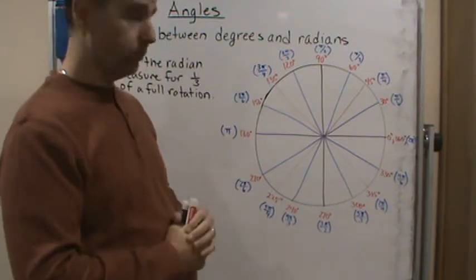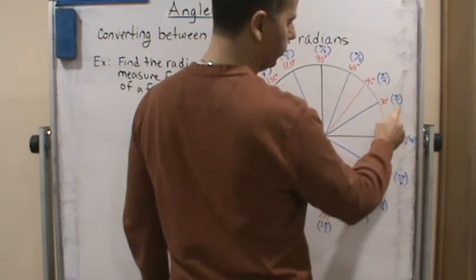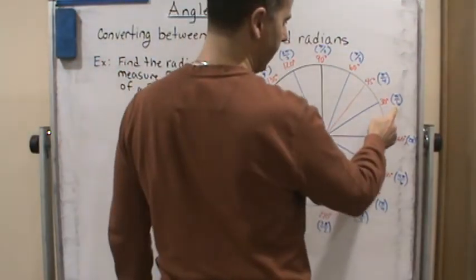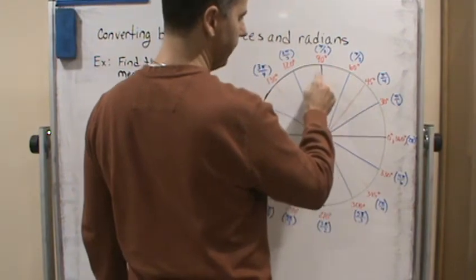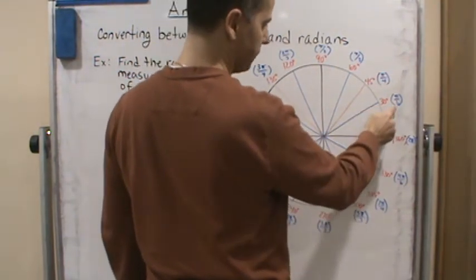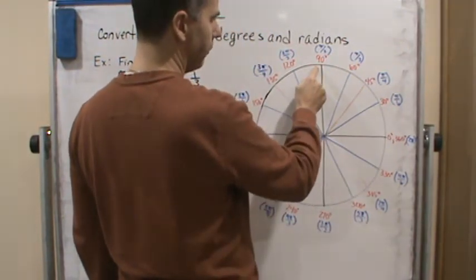So 30 degrees is equal to π over 6, and notice that again, this is π over 6, and every multiple of 30 degrees is also a multiple of π over 6. So this is π over 6, this is 2π over 6 which is π over 3, 3π over 6 which is π over 2, and then so on.